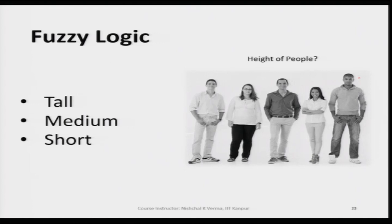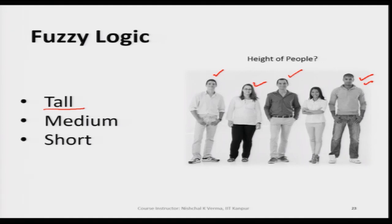The tallest person is the tallest, but when we talk of the 'tall' group — the group of persons who are tall in terms of height — a person can belong to that group or can also partially belong to the 'medium' group. We do not know whether to put a particular person in the medium group or the tall group. That is why we say this person can be partially present in the tall group and partially in the medium group — partial belongingness can exist.